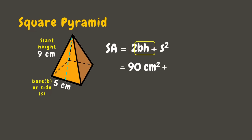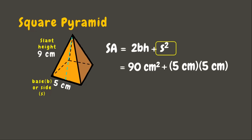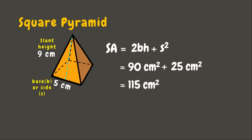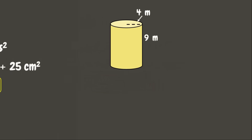Plus the square of the side of the base, which is 5 centimeters — so that will be 5 centimeters times 5 centimeters, which is 25 square centimeters. Adding the two areas, we get 115 square centimeters. This is the surface area of our square pyramid. Great job! Now let's have another figure — this time we have a cylinder.